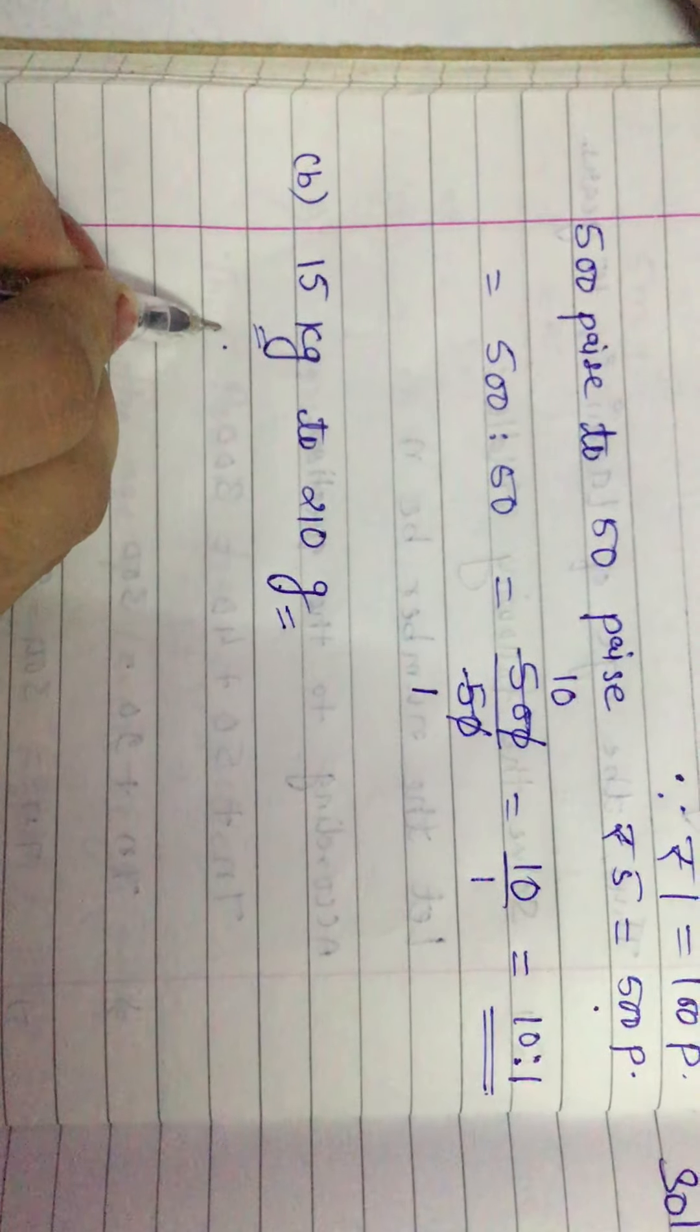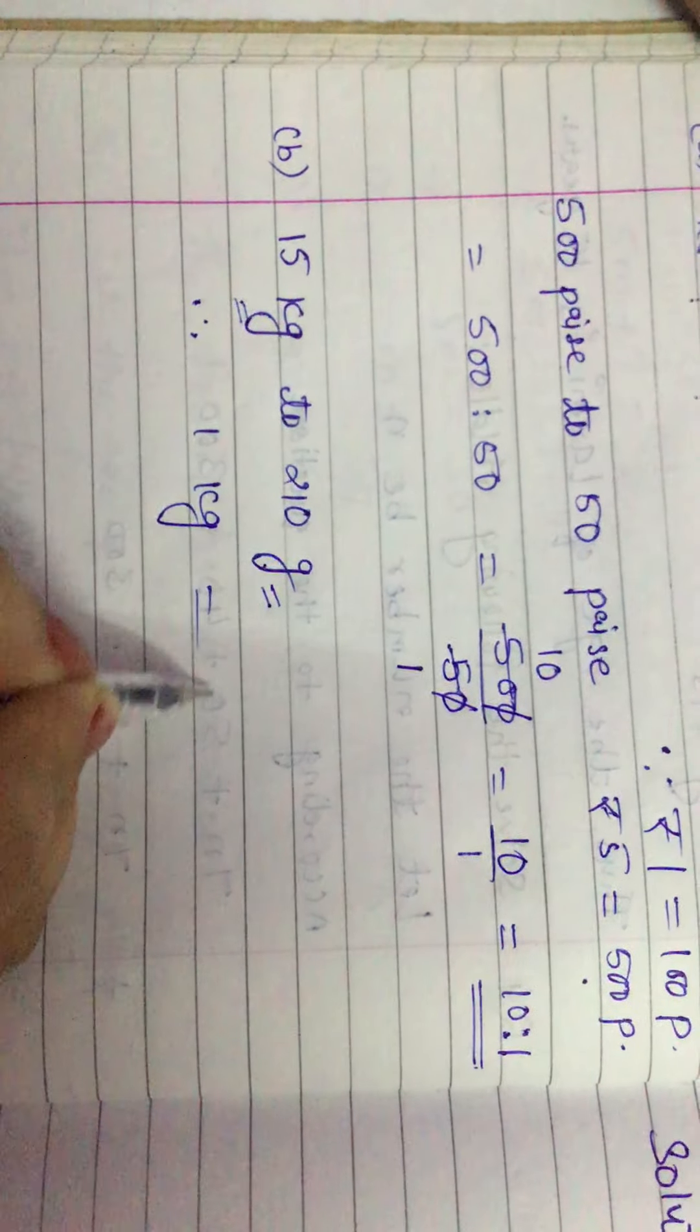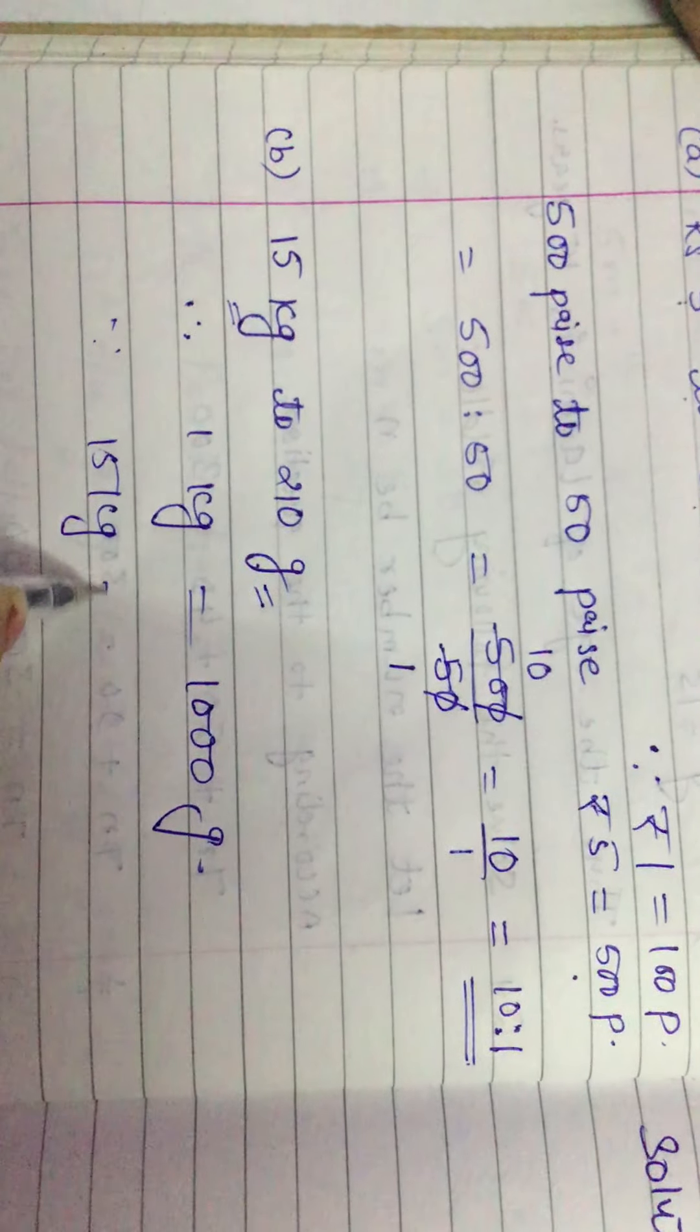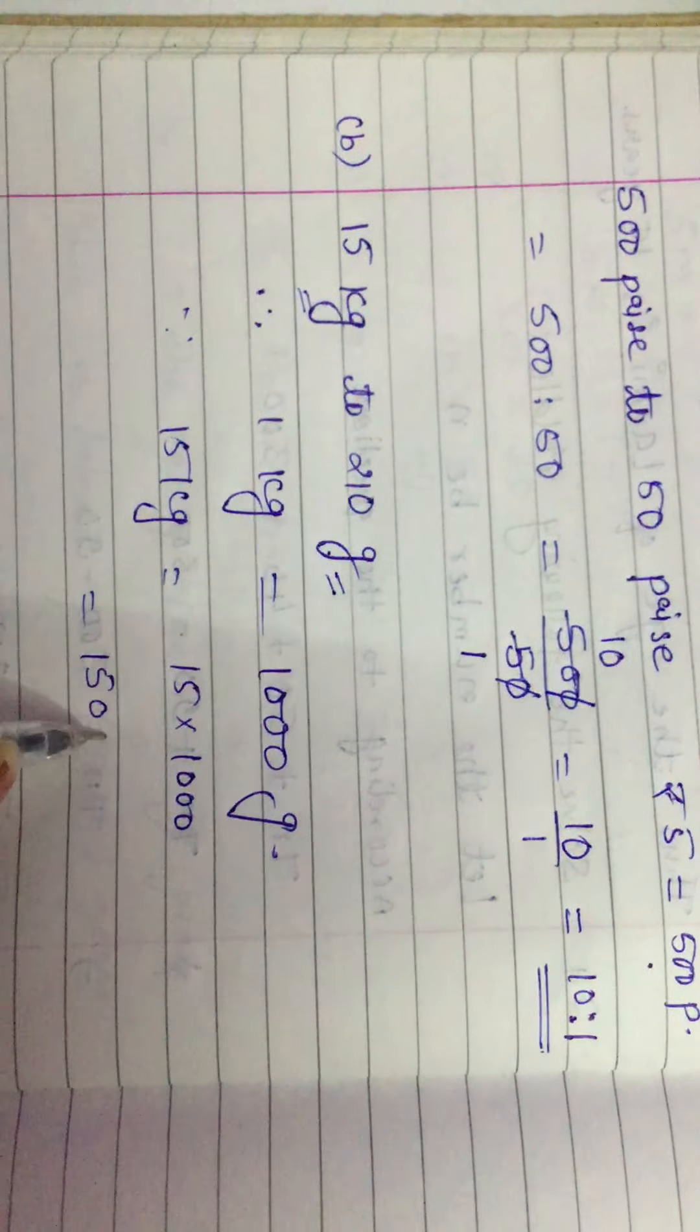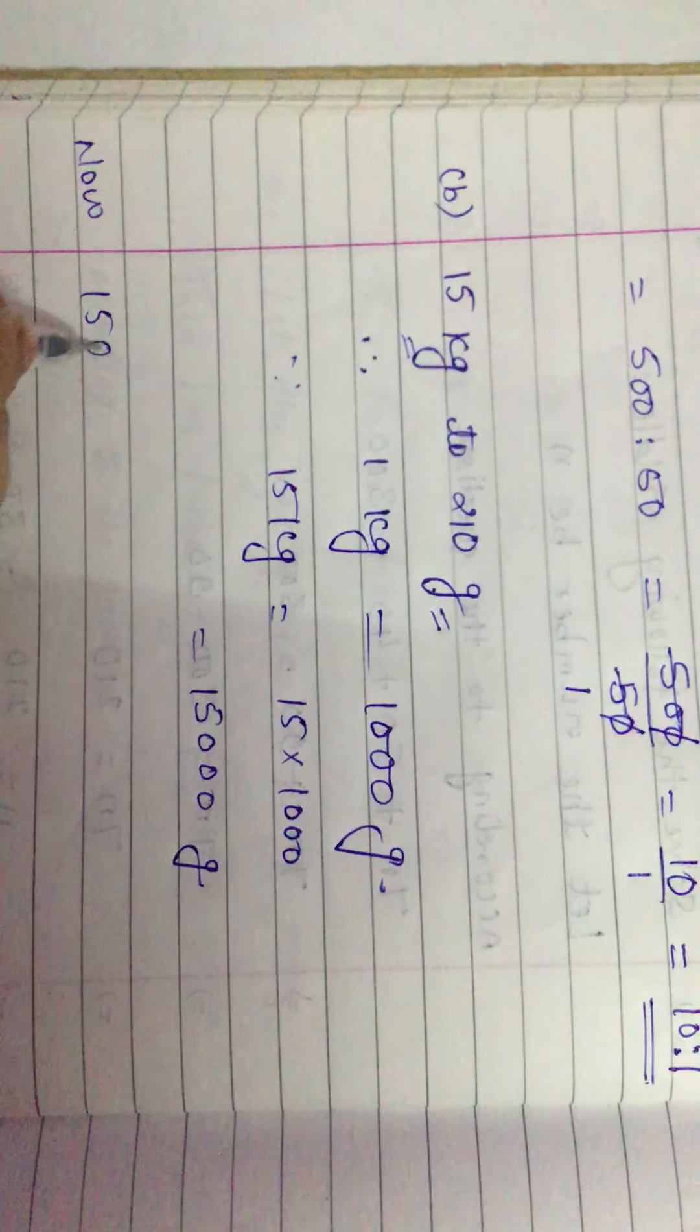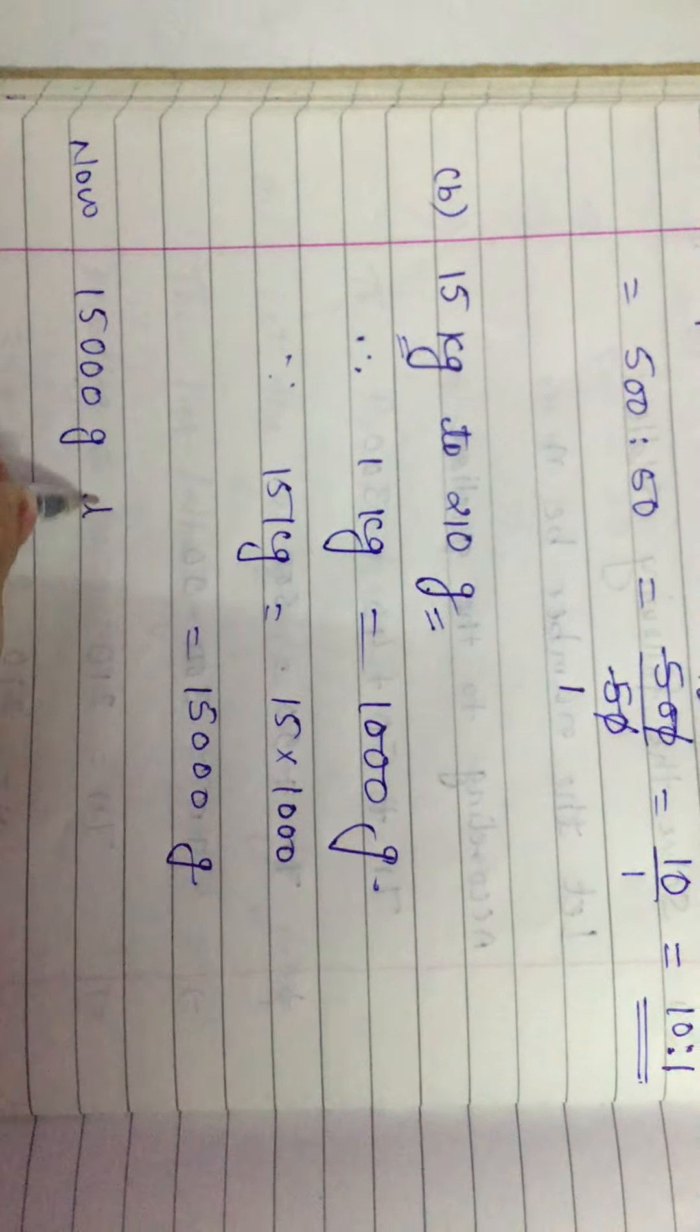We know that 1 kg is equal to 1000 gram. That's why 15 kg equals 15 into 1000, which means 15,000 gram. Now we can find the ratio of 15,000 gram to 210 gram.